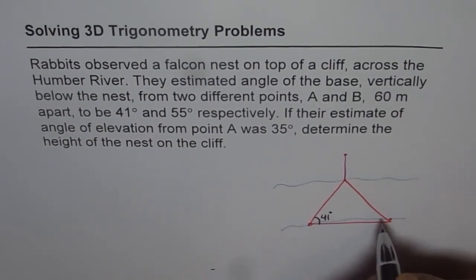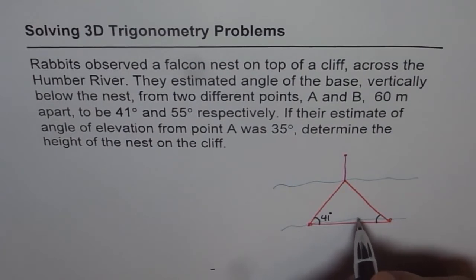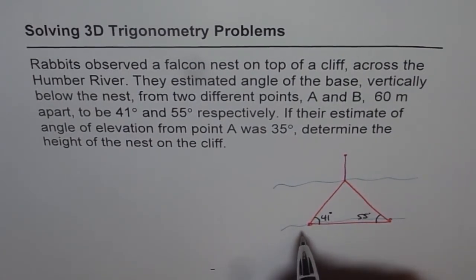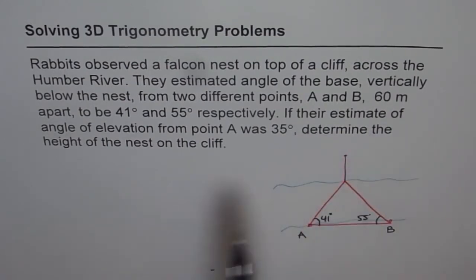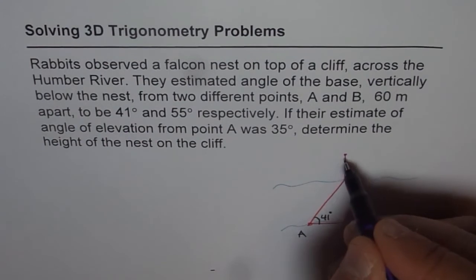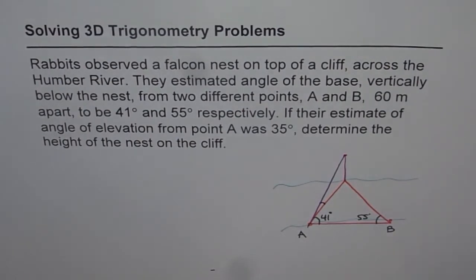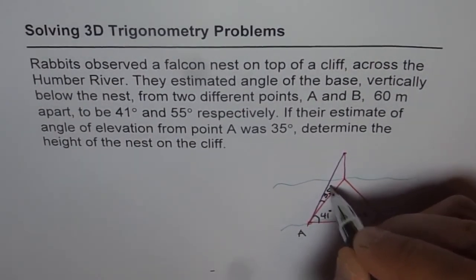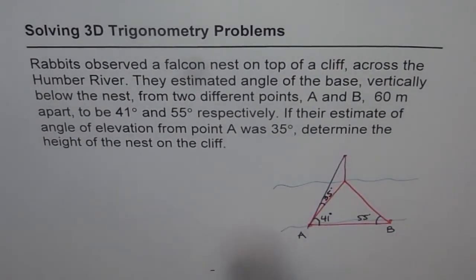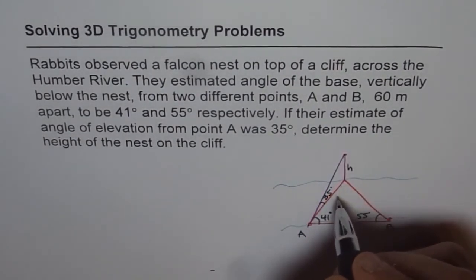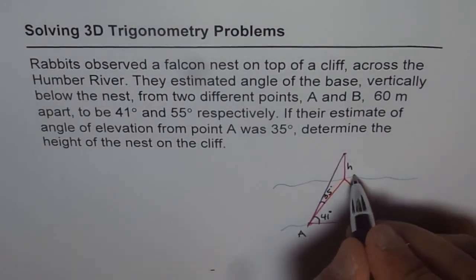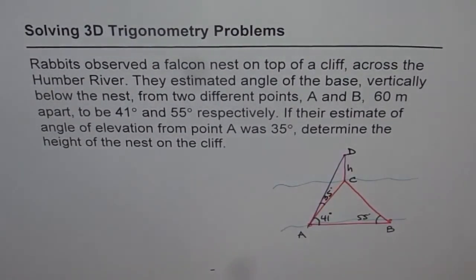So this angle is 41 degrees and the other one is 55 degrees. Let's call the first point A and the next point B. The angle of elevation from point A is 35 degrees — that is the angle which is 35 degrees. We want to determine the height of the nest, which is this height on the cliff. Let's label it: this point is C and this point is D. So we need to find DC.